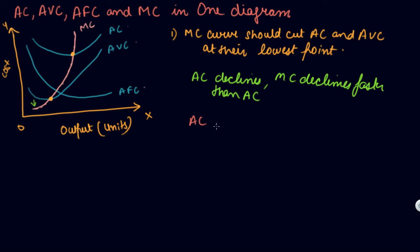The second relationship: when AC rises, MC rises faster than AC. From here, AC has started rising and MC is rising faster than AC. Similarly here, AC has started rising and MC rises faster. So when your AC or AVC starts rising, MC rises faster than AC, and MC cuts AC from its lowest point.